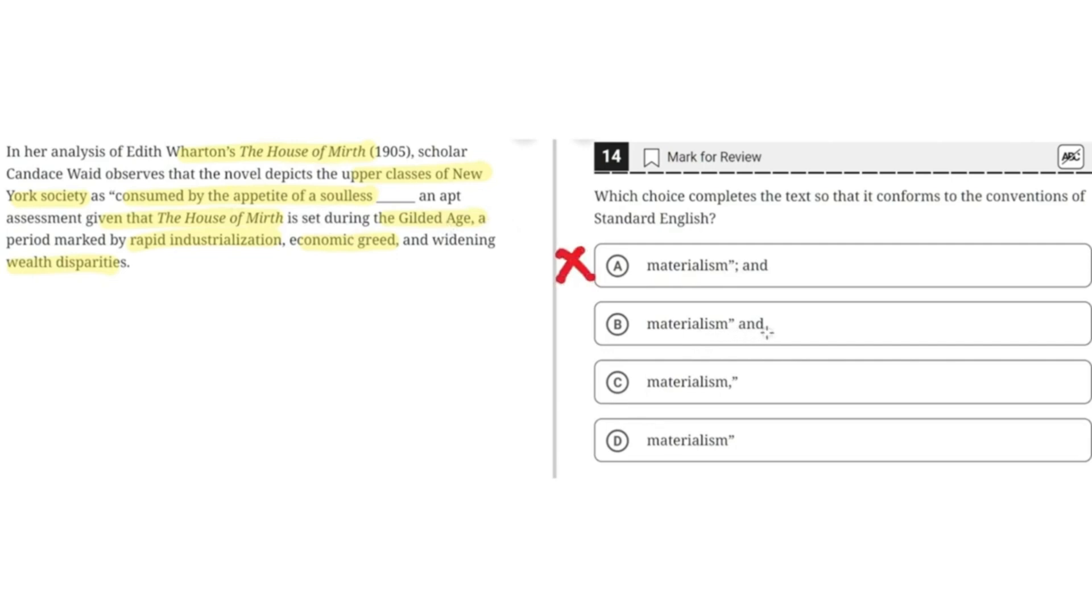B, materialism and. This isn't correct because and is unnecessary here, and it would illogically imply that the upper classes of New York society are an apt assessment given that The House of Mirth is set during the Gilded Age. So this doesn't make sense.